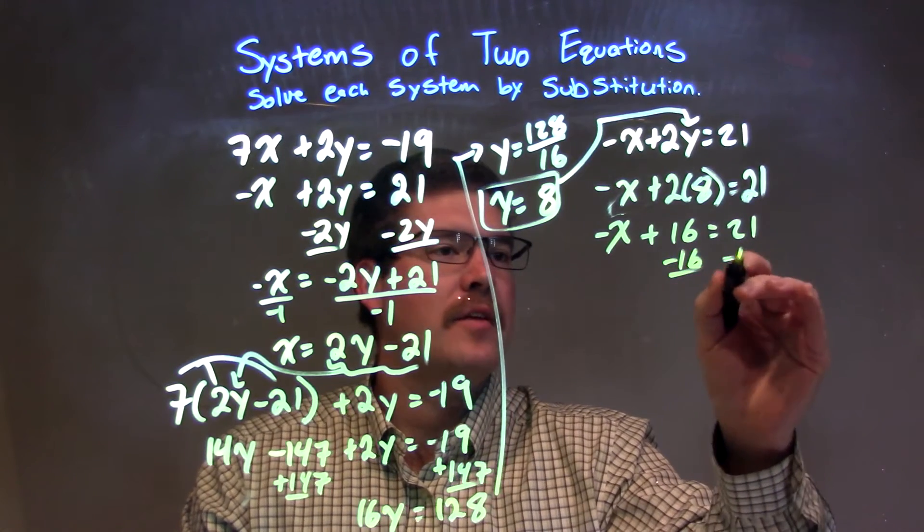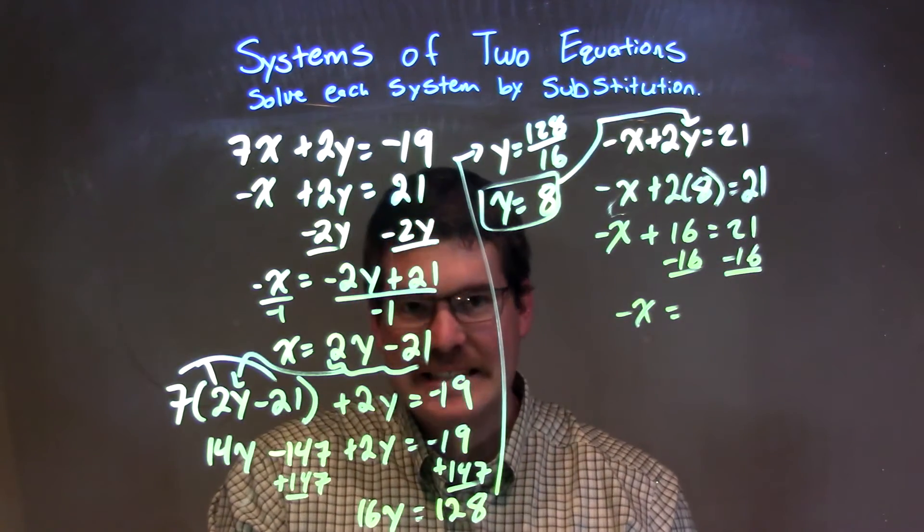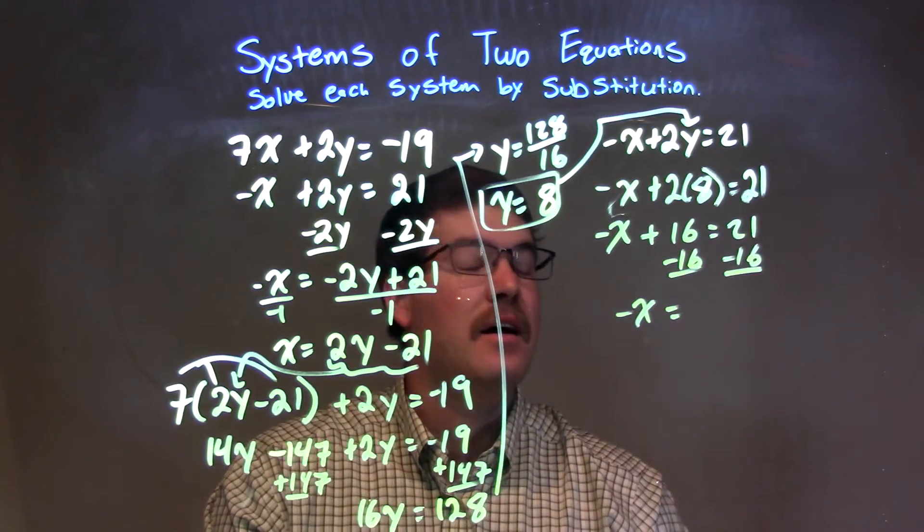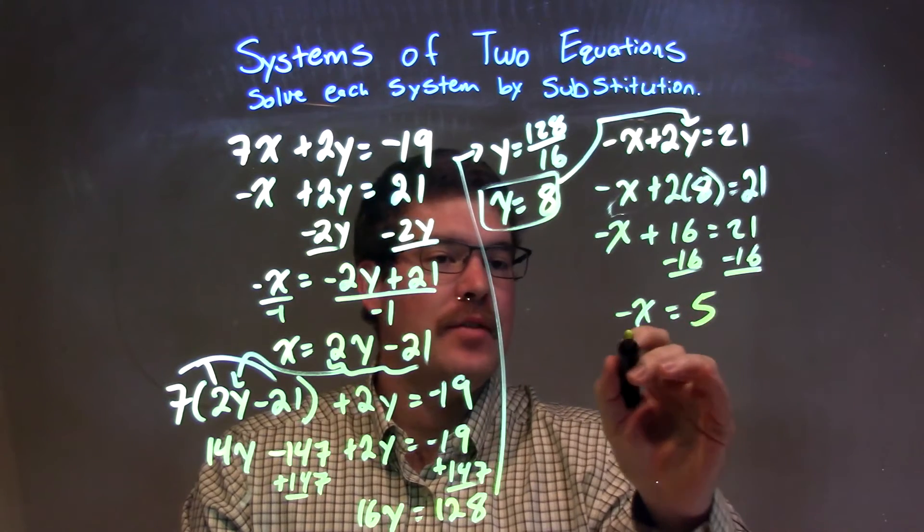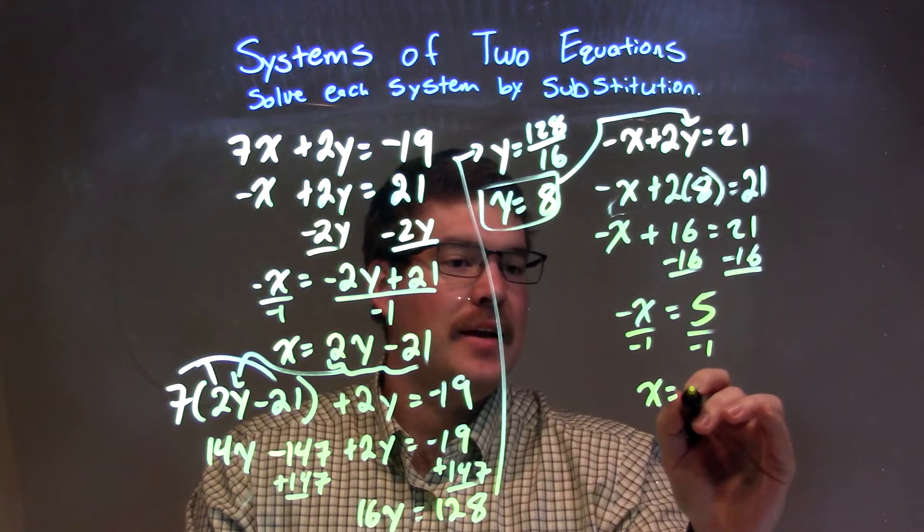Subtract the 16 from both sides, and we have negative x equals 21 minus 16, which is a positive 5. Positive 5, divide both sides by negative 1, and we have x equals negative 5.